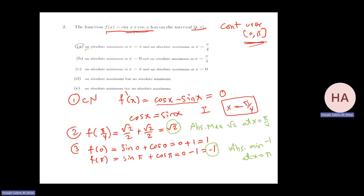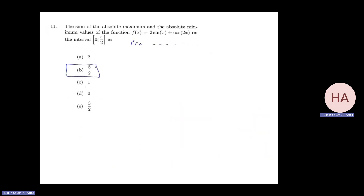The absolute minimum is at x equals pi and the absolute maximum is at x equals pi over 4. That is the answer. Let me move to another problem.